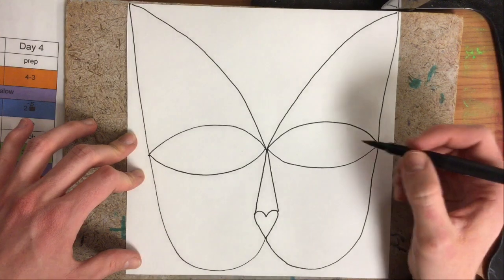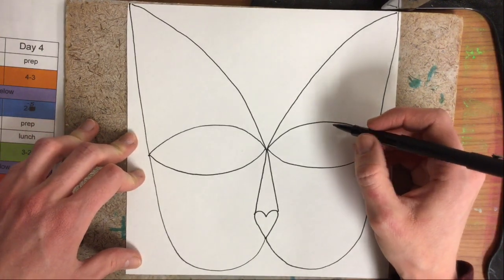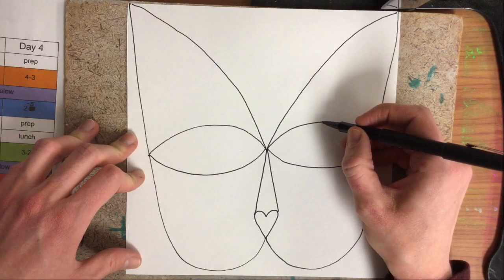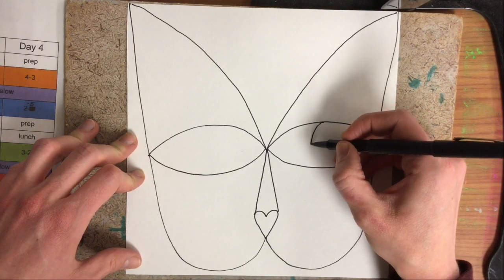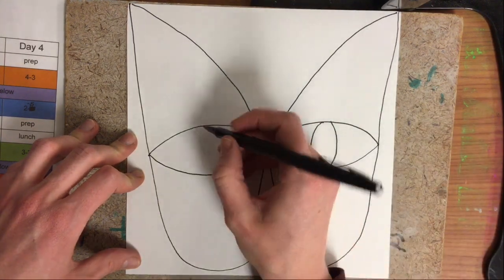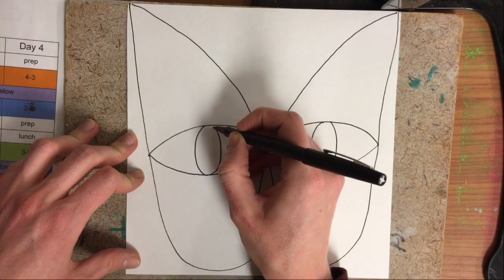Inside those eyes we're going to add a pupil. Cat's pupils are not quite round like humans - they're more of a football shape. Start at the top, curve around, down to the bottom, and back up. Same thing on the other side: curve around, down, back up.